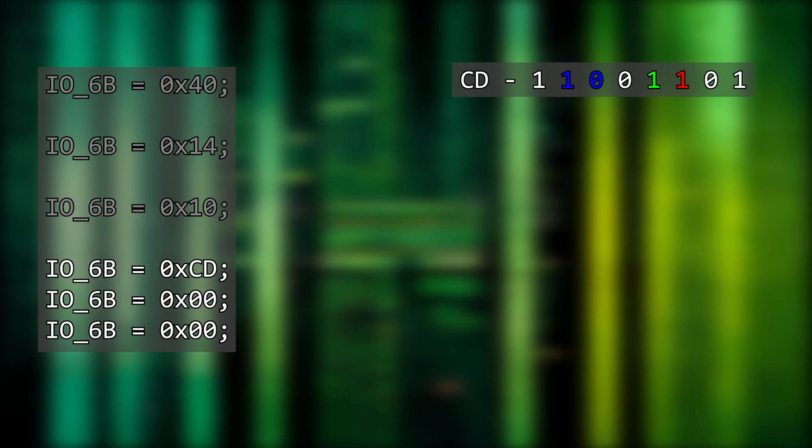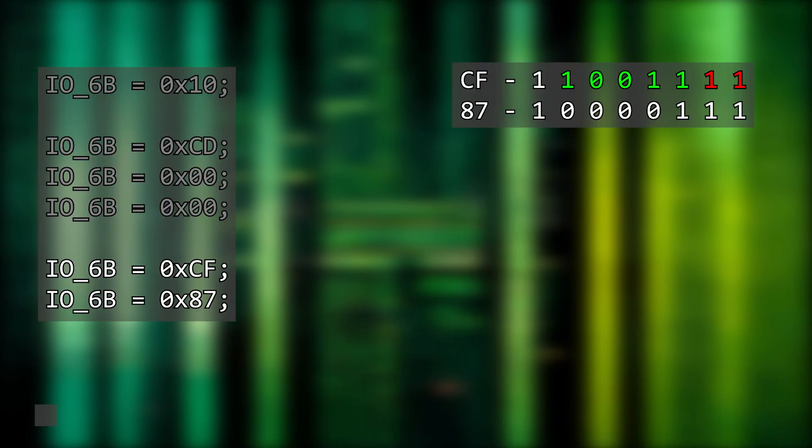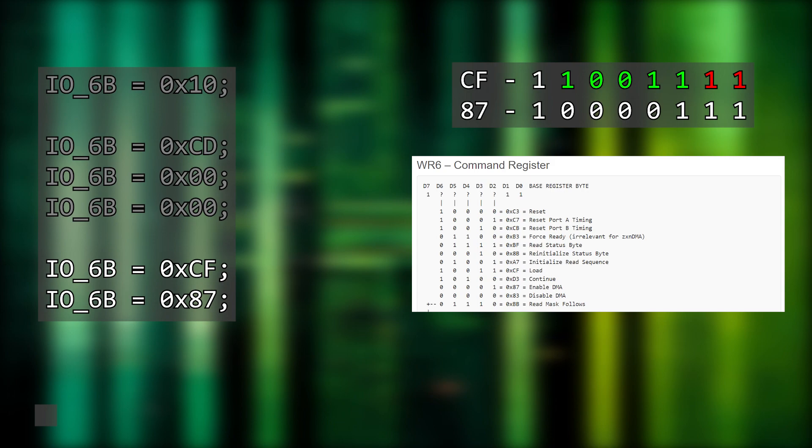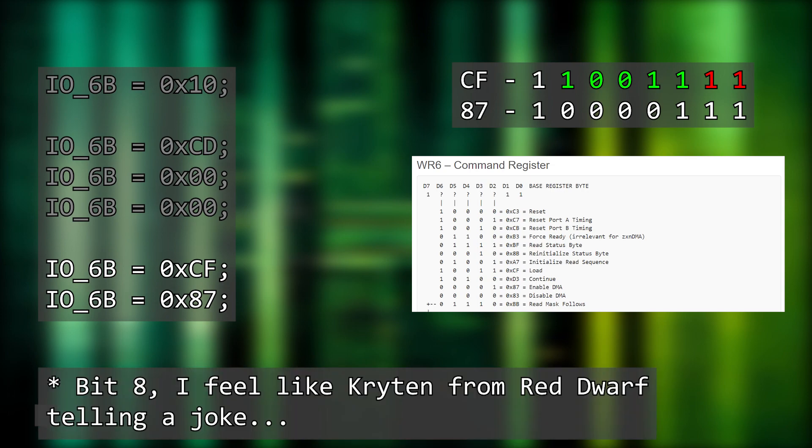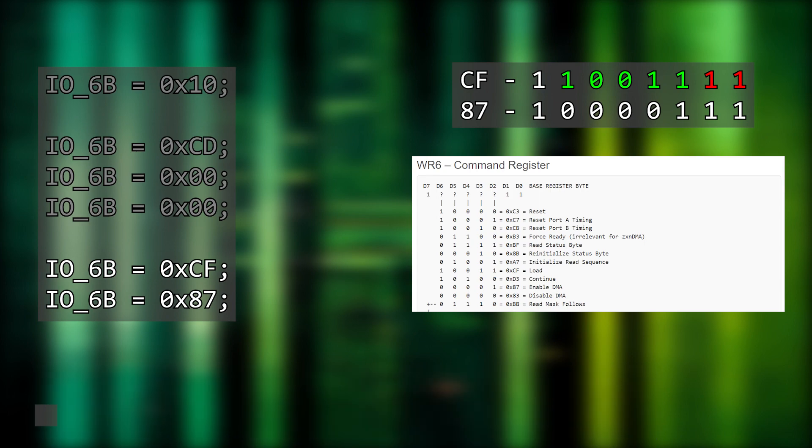We can ignore WR5 because by default it seems to stop after copying, which is what we want. Finally we need to set WR6 with the bit pattern 1100 1111. Bits 0 and 1 need to be 1, then the pattern 1 0 0 1 1 means load, and bit 7 needs to be 1. Then we write hex 87, or 1000 0111, which is the bit pattern to enable DMA and kick the whole thing off. This style of programming is weird — it's like you're repeatedly writing to the same memory location, but behind the scenes it's all turned into assembly OUT instructions that go to hardware ports, not RAM. Fortunately Z88DK understands this and doesn't optimize it away.